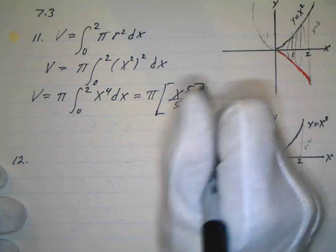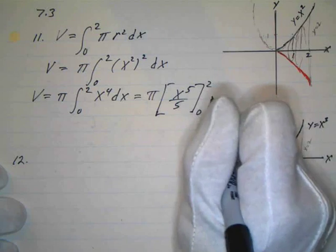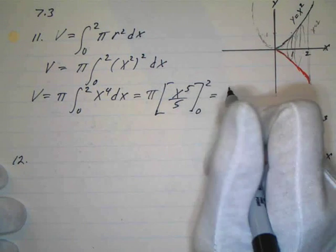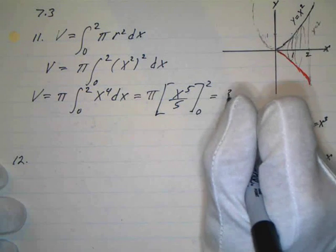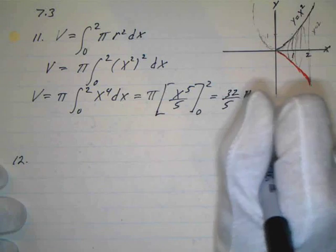I'm going to evaluate that from 0 to 2 and the nice thing is the 0 goes away. So I just end up with, and what's 2 to the 5th? 2 times 2 is 4 times 2 is 8 times 2 is 16 times 2 is 32. So that's going to be 32 over 5 times pi. And that's your volume.